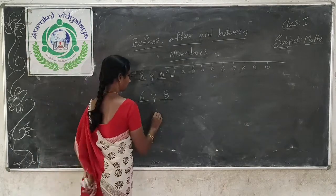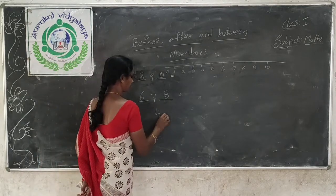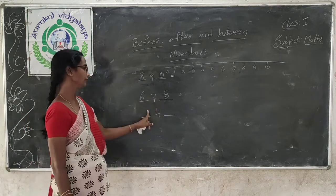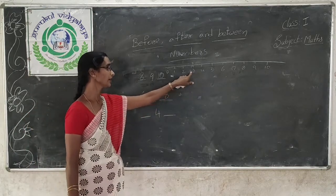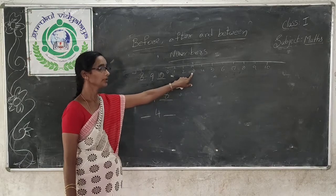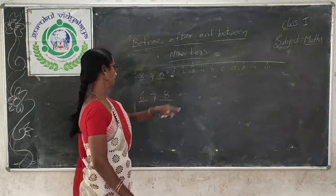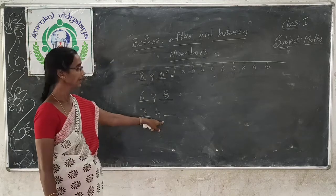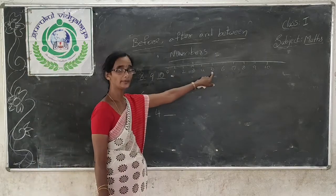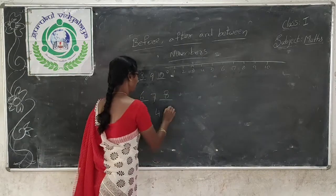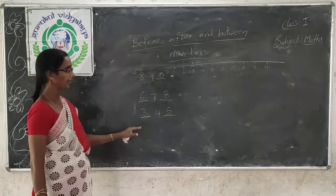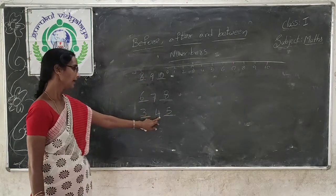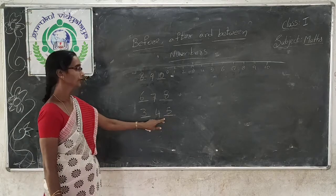And one more example: 4. Which number comes before 4? 3. So before number 4 is 3. And what comes after 4? 5. So 3 comes before 4 and 5 comes after 4.